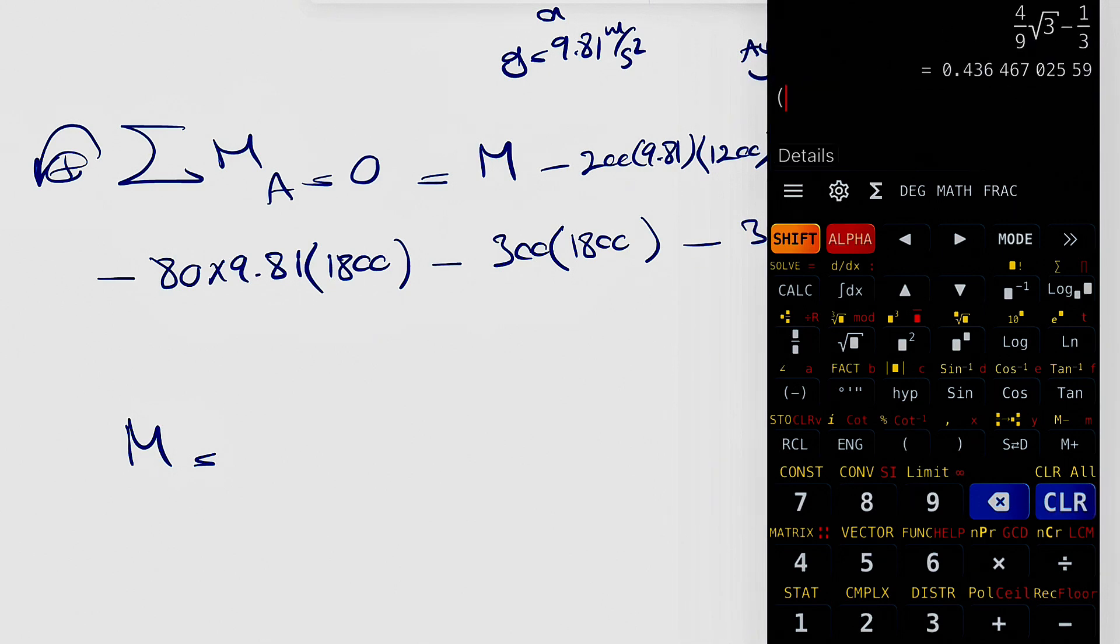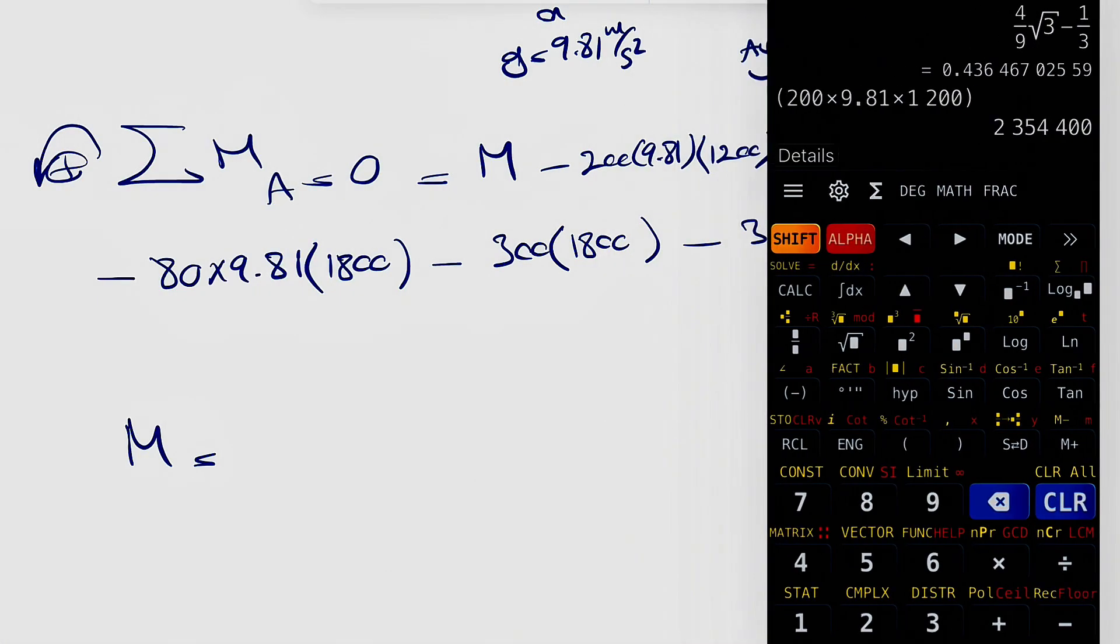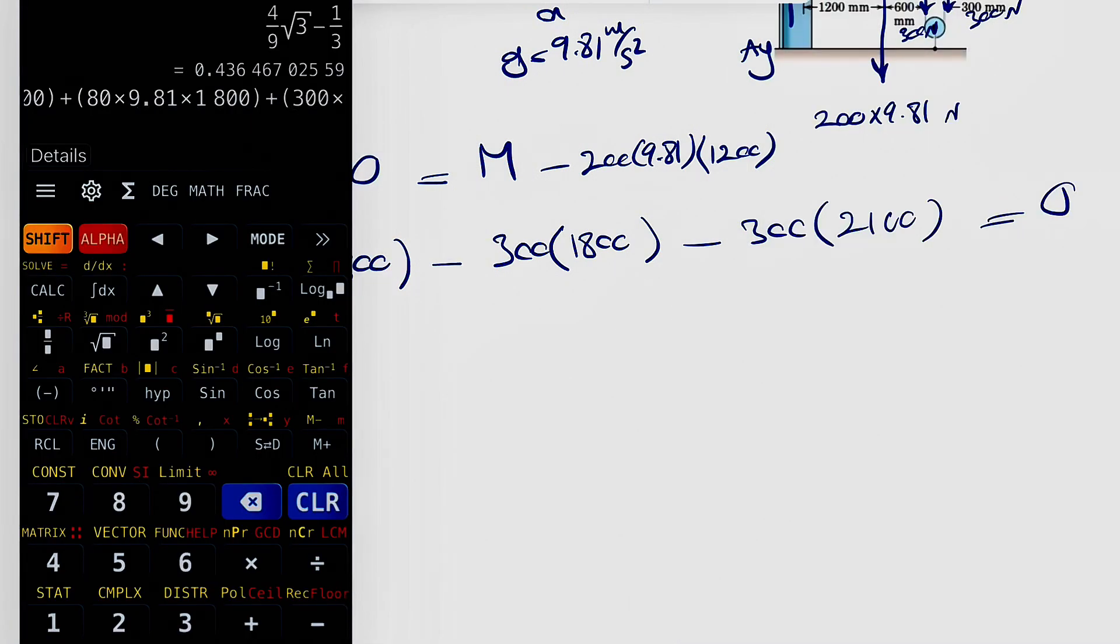Let's see what we get. So 9.81 times 1200, plus 80 times 9.81 times 1800, plus 300 times, you can just factor 300 for those two, it's going to be 3900.